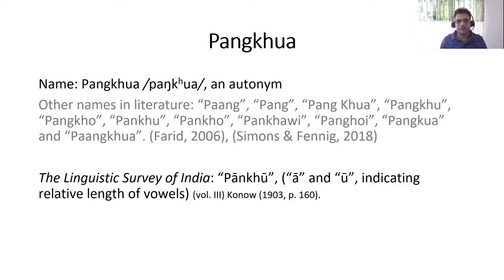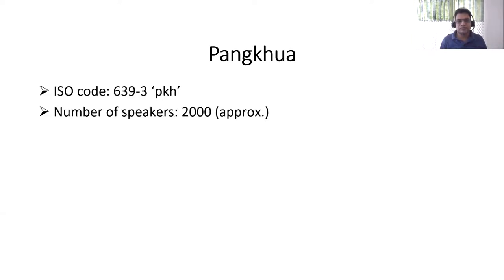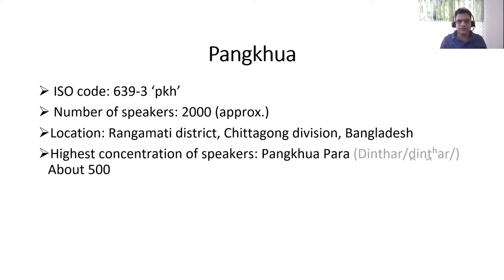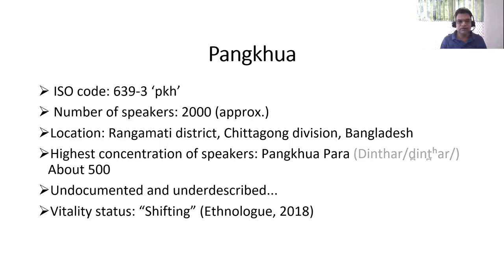In the Linguistic Survey of India, the name they used was Panku — you can see a bar on the i and u indicating length of the vowels. The total number of speakers is around 2,000 at this moment. Pankwa speakers are mostly located in Rangamati district, Chittagong division, Bangladesh. The highest concentration of speakers is in the village called Pankwapara, with around 500 speakers. The language is largely undocumented and under-described, and is considered as shifting according to Ethnologue.